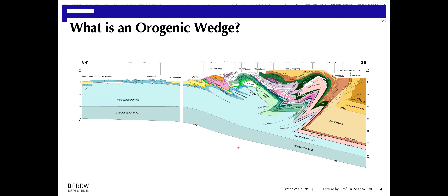We've also seen this cross-section of the Alps. What all of these pictures have in common is that they show the deformed orogenic belt has a wedge shape — thicker in the back, thinner in the front. It's made up of slices of crustal material taken off the down-going plate and accreted or deformed and attached to the upper plate to form this deformed wedge, what I would call an orogenic wedge.